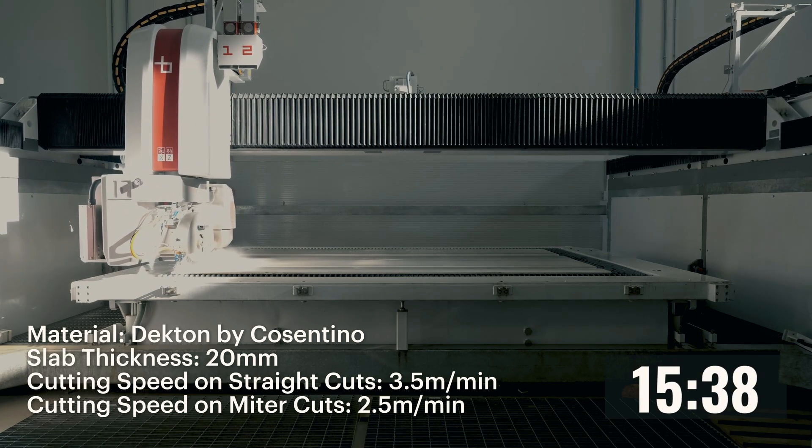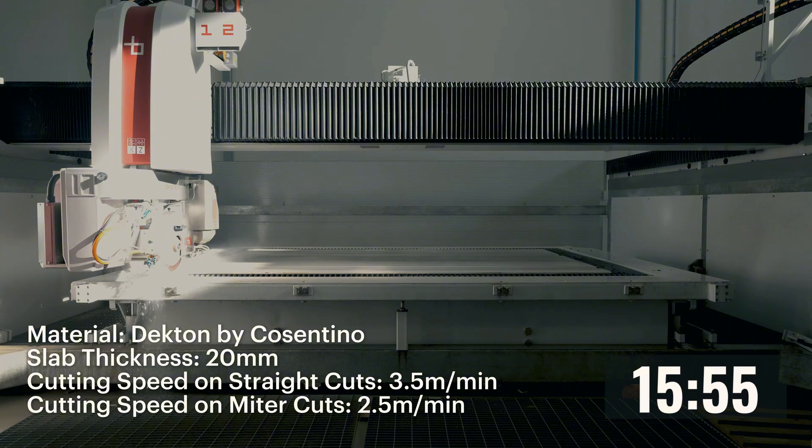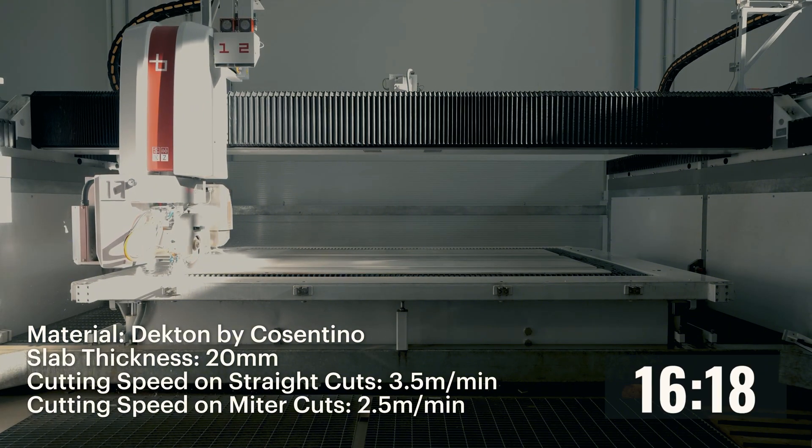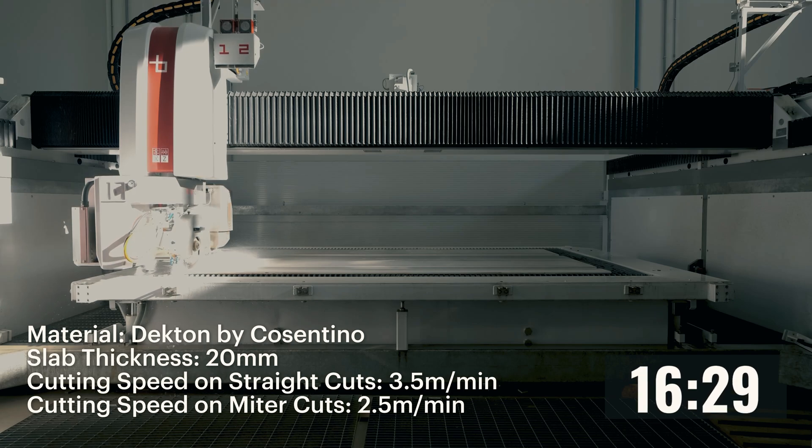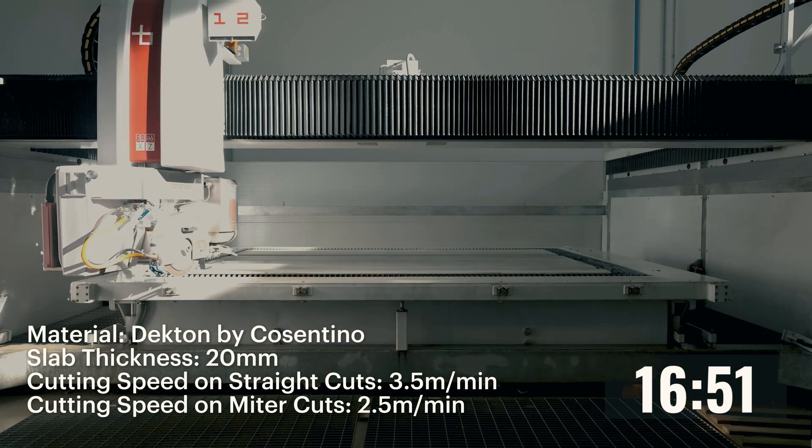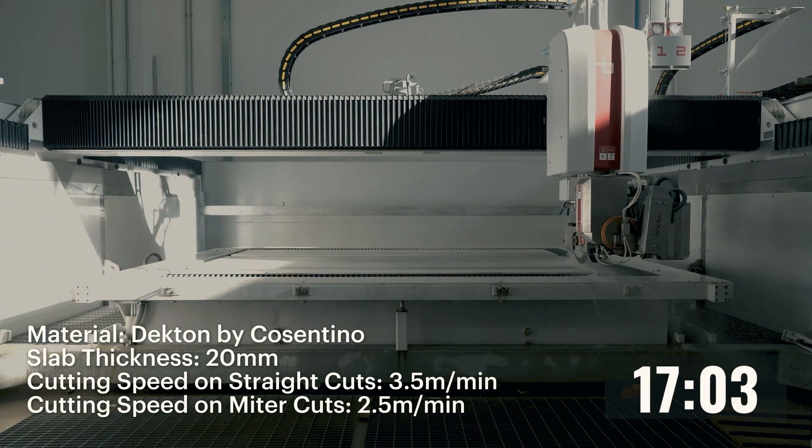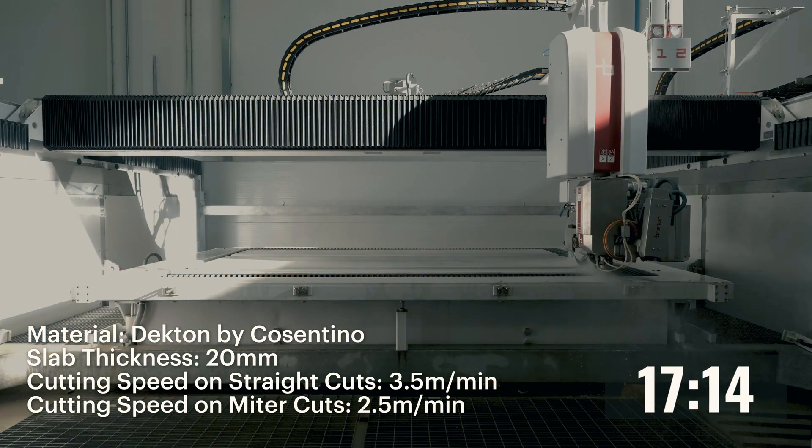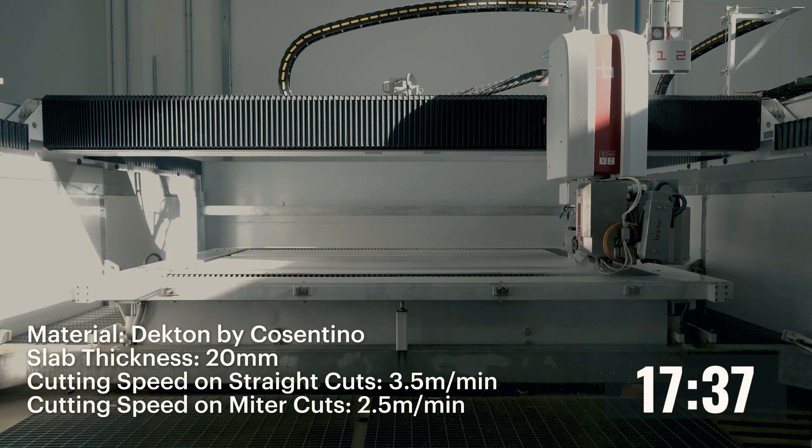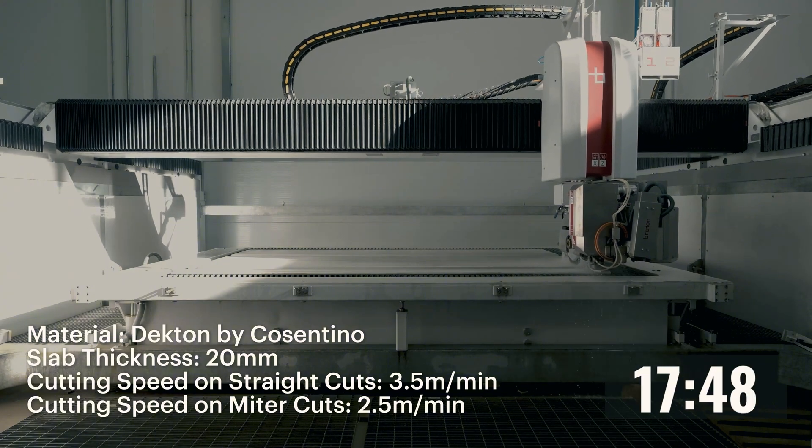These would otherwise require time and advanced technical skills from operators. On this topic, it is worth mentioning that Breton Trinity is also equipped with the Sapiens system, the latest innovation from our developers. Sapiens is an integrated software solution that enables the creation of cutting recipes for each material. It not only controls cutting parameters such as speed and RPM.